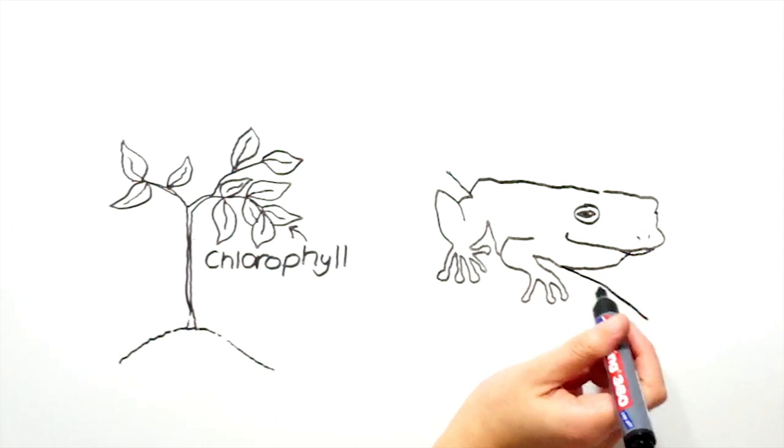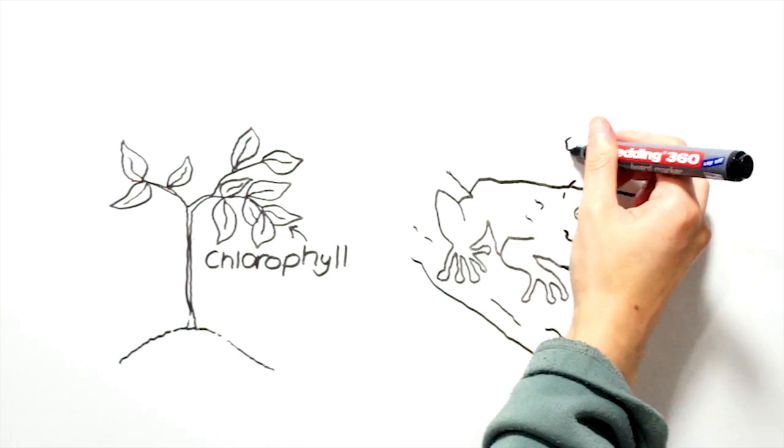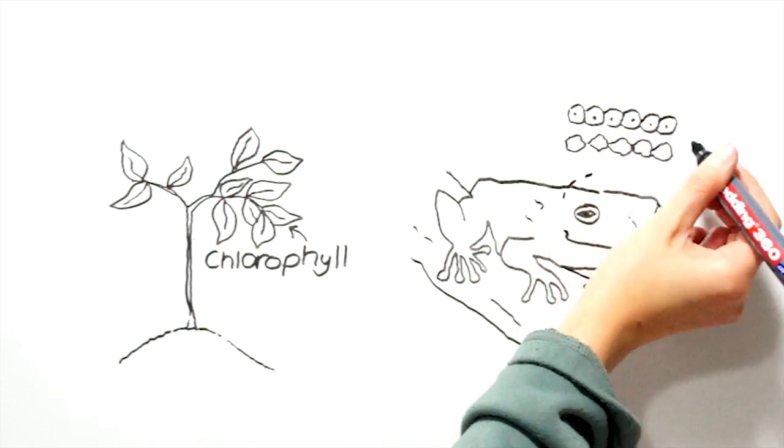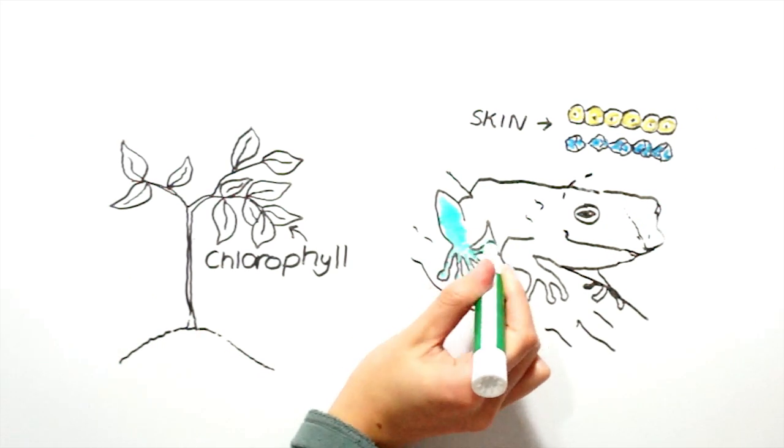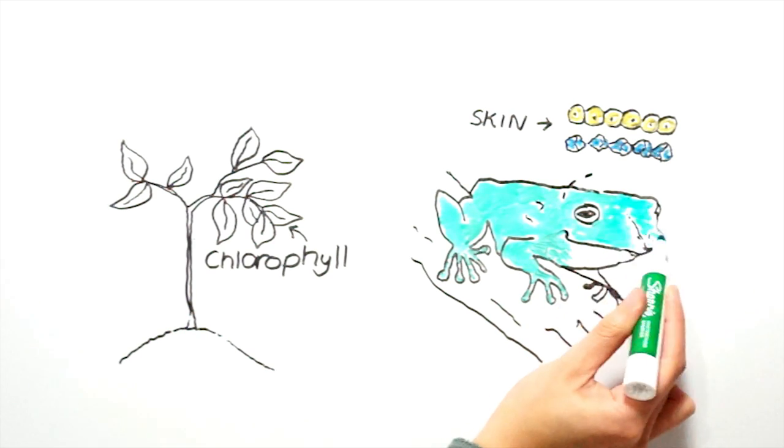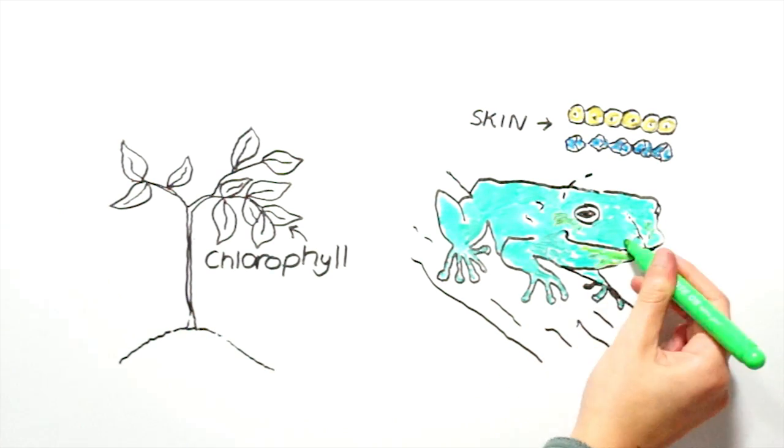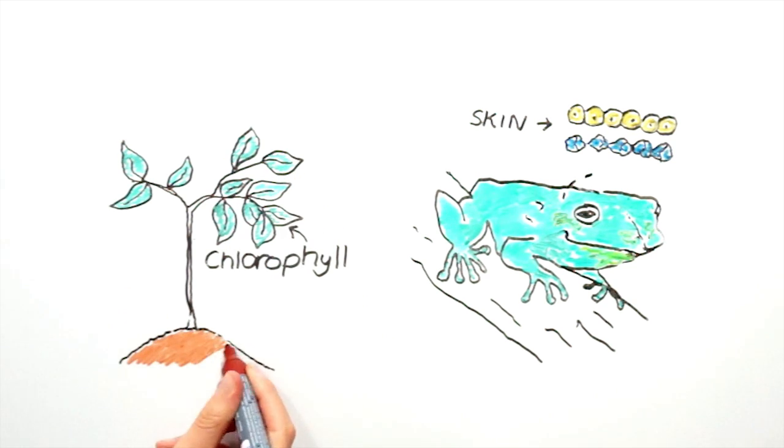In fact, animals which we see as green, like frogs, aren't actually green at all. Frogs and many other green-appearing animals have blue crystals underneath yellow colored cells. As light reflects off these blue crystals, it passes through the yellow cells and all colors are filtered out except green. Now this just goes to show how hard it is for nature to make green.